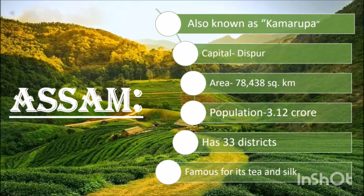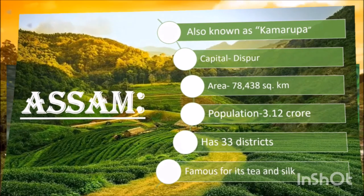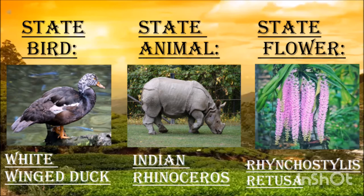Assam is also known as Kamarupa. It has the world's biggest weaving village, Sualkuchi, and is famous for producing high quality Muga silk and gamosas, which are traditional Assamese attire. The capital is Dispur. The area is 78,438 square kilometers. The population of Assam is 3.12 crores and it has 33 districts. Assam is mainly famous for tea, exported to many countries around the world. Guwahati, a city in Assam, has all important institutes and amenities and is known for holy sites like the Kamakhya temple. The state bird of Assam is the white-winged duck, the state animal is the Indian rhinoceros, and the state flower is Rhynchostylis retusa.